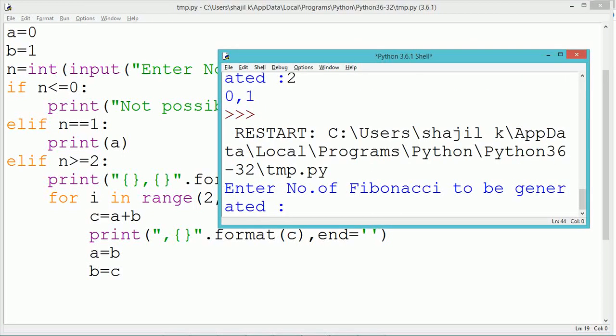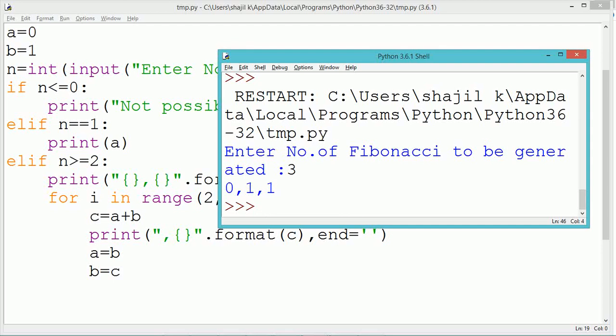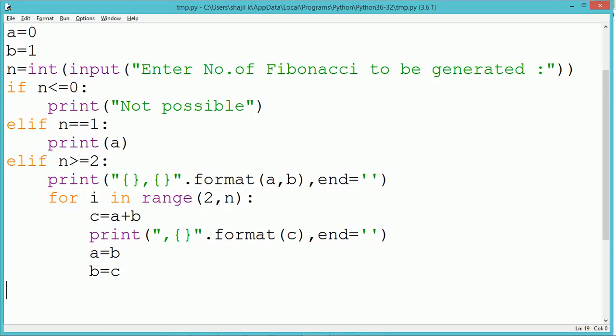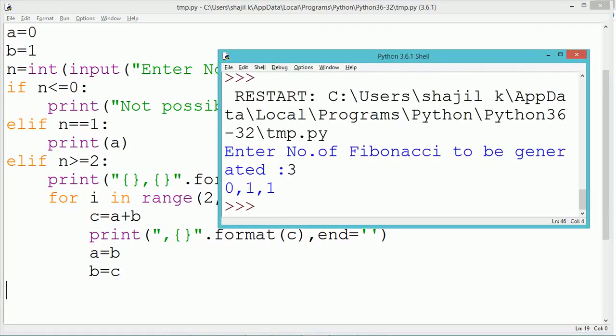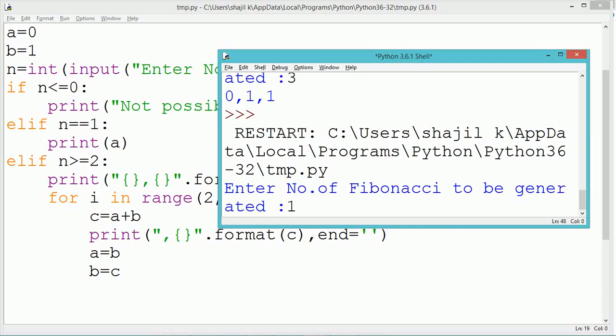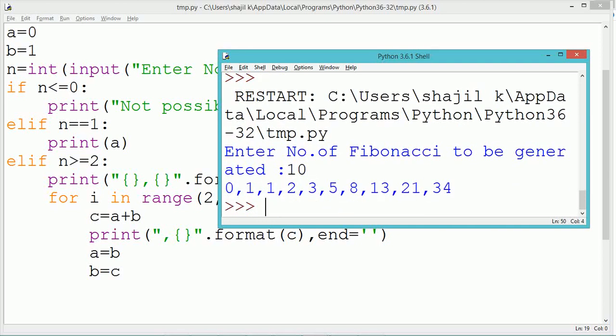Inside the for loop, the new Fibonacci number has been calculated which is c equals the sum of the two previous Fibonacci numbers which are a plus b. And the value of c also gets printed.